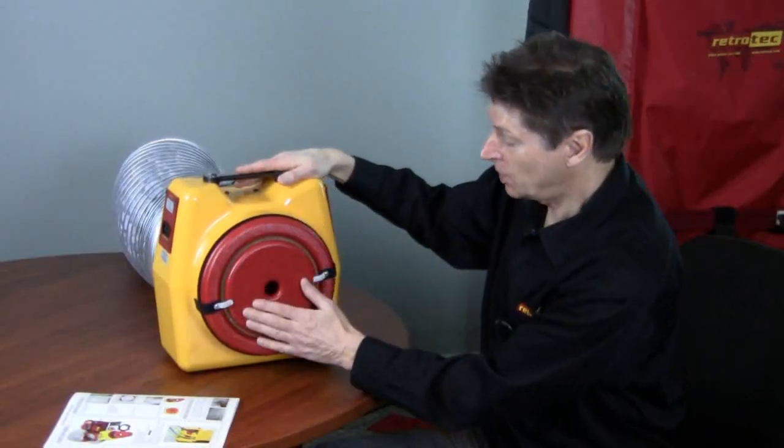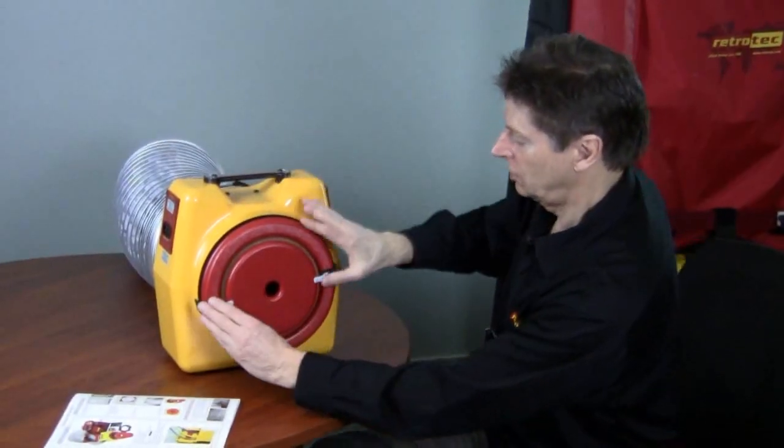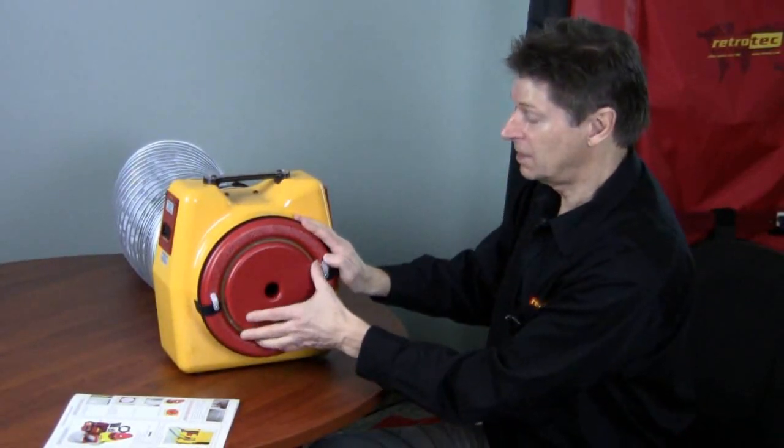The last check off box for step number one is to set the duct tester on the correct range. Here we have what's called the low range and that would be for a very tight duct system.